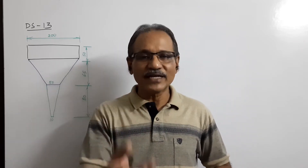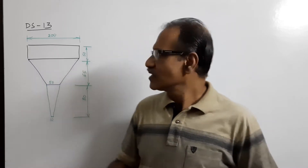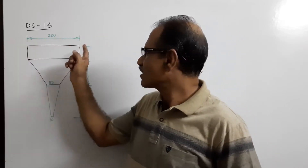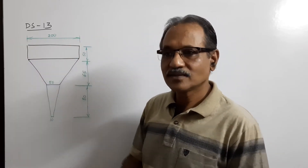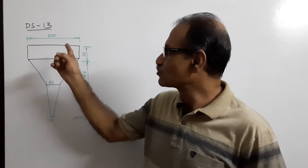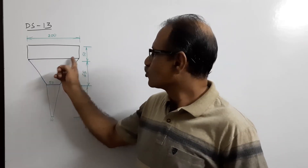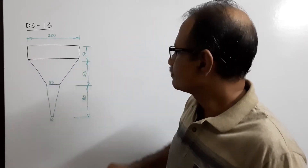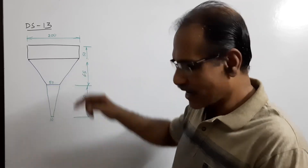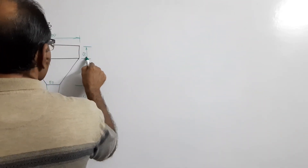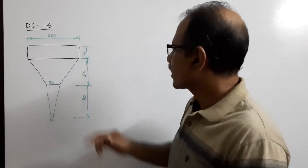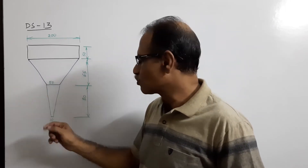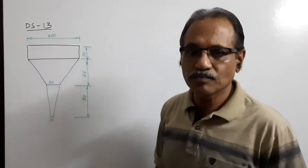This funnel is made of metal sheet or plastic and has three portions. First, a cylindrical portion of 200 mm diameter and 50 mm height. Second, a frustum of a cone with 200 mm diameter at the top and 50 mm diameter at the bottom through a height of 65 mm. Third, another frustum of a cone with 50 mm diameter at the top and 10 mm diameter at the bottom through a height of 80 mm.